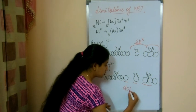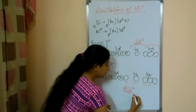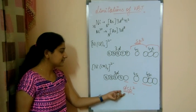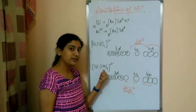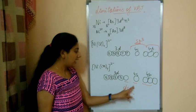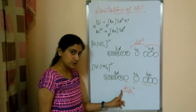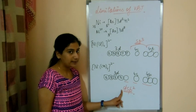That means dsp2 hybridization will occur and these hybrid orbitals will overlap with fully filled orbitals of CN negative and will form this. This hybridization, dsp2, means square planar geometry.